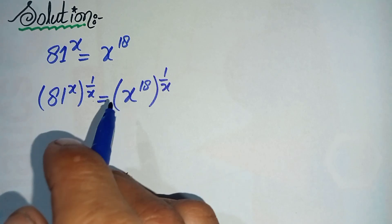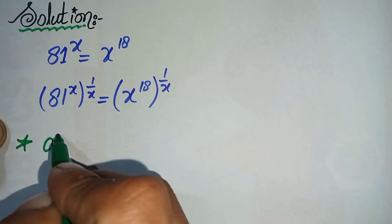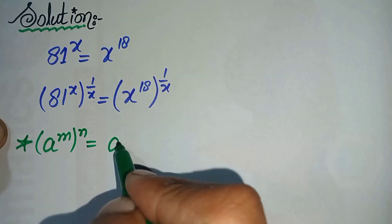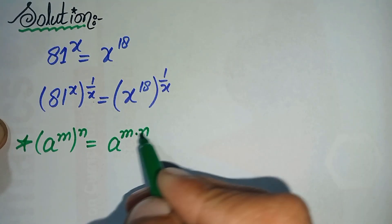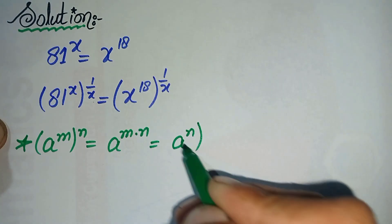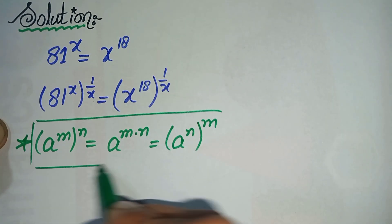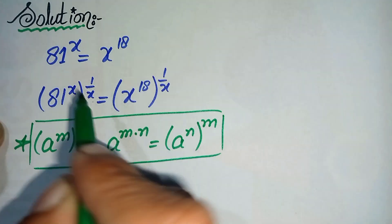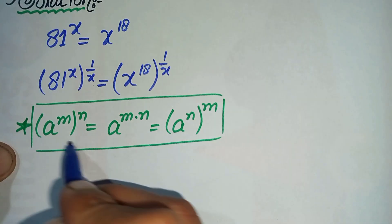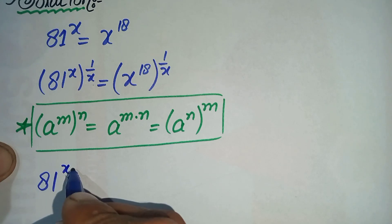Now on both sides we will use the famous exponential math property: a raised to power m, whole raised to power n, can also be written as a raised to power m times n. By using this property on the left hand side, we will multiply the powers with each other, so it will become 81 raised to power x times 1 over x.